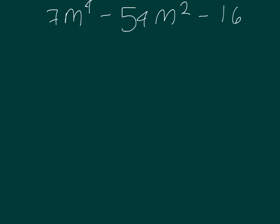All right, the first step is going to be multiply 7 times the 16, and that's going to get you to negative 112. And then we're going to have to find a number that multiplies to get 112 and adds to get negative 54, and that's going to be negative 56m and 2m because they add and multiply to get 54 and 112.